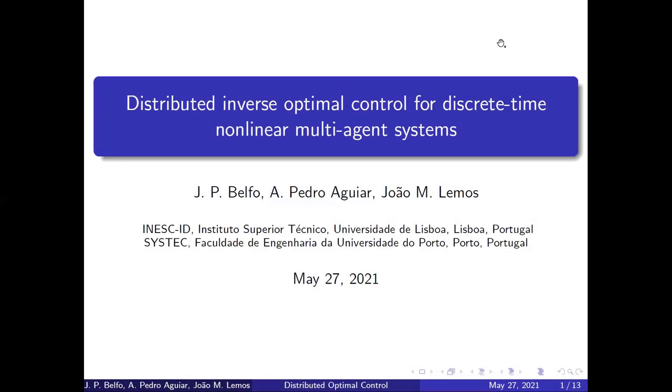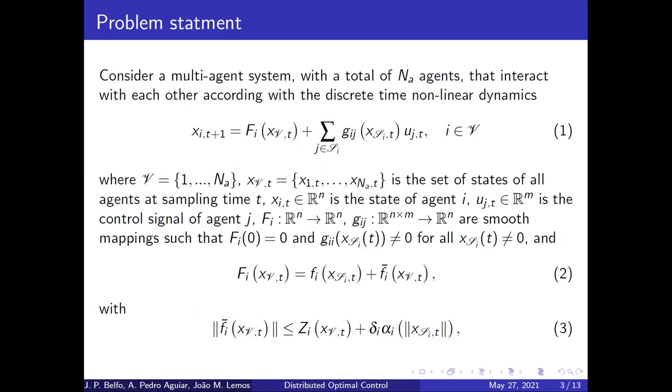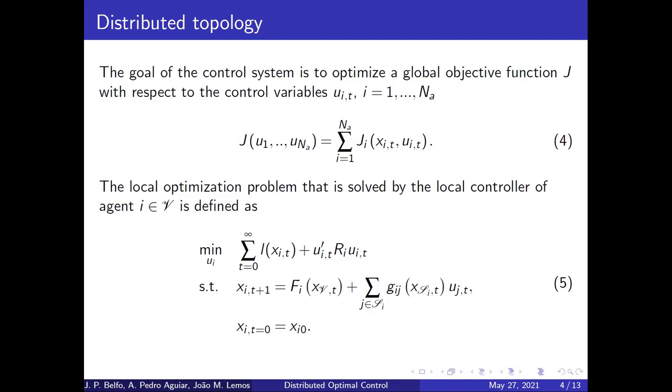I'm going to present a paper named Distributed Inverse Optimal Control for Discrete-Time Nonlinear Multi-Agent Systems. This presentation is going to be divided in these five different parts. Let's start with the introduction. We start by considering a multi-agent system in which the state of each agent is given by equation 1. The state of agent i depends on the states and manipulated variables of its neighbors that are known, and the states of the rest of the agents in the network, through the function f_i_bar, that is unknown, and thus constitutes the perturbation that is assumed to be bounded. The goal, then, is to optimize the global cost J, that can be written as the sum of local cost functions J_i. The local optimization problems are defined in equation 5.